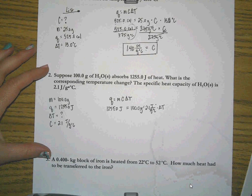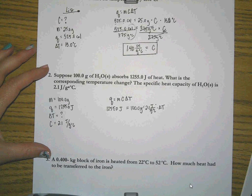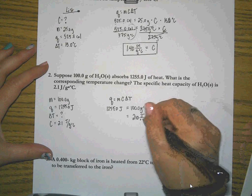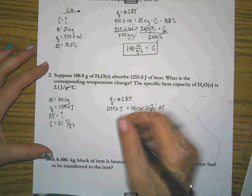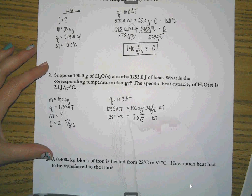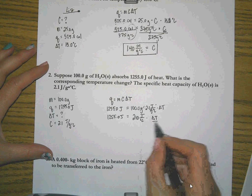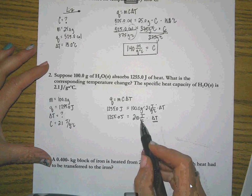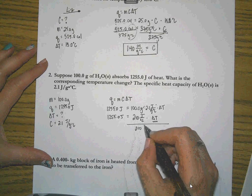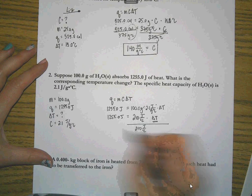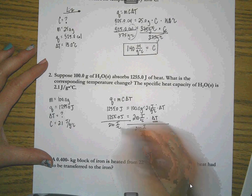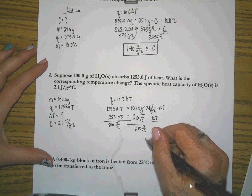So again, for my algebra challenged friends, let's go ahead and simplify here. This gives me 210 joules over degrees Celsius times delta T. And yes, I really need to rewrite this. All right. In order to get the delta T by itself, if I'm multiplying by 210, then I need to divide both sides by 210 joules over grams degree Celsius.